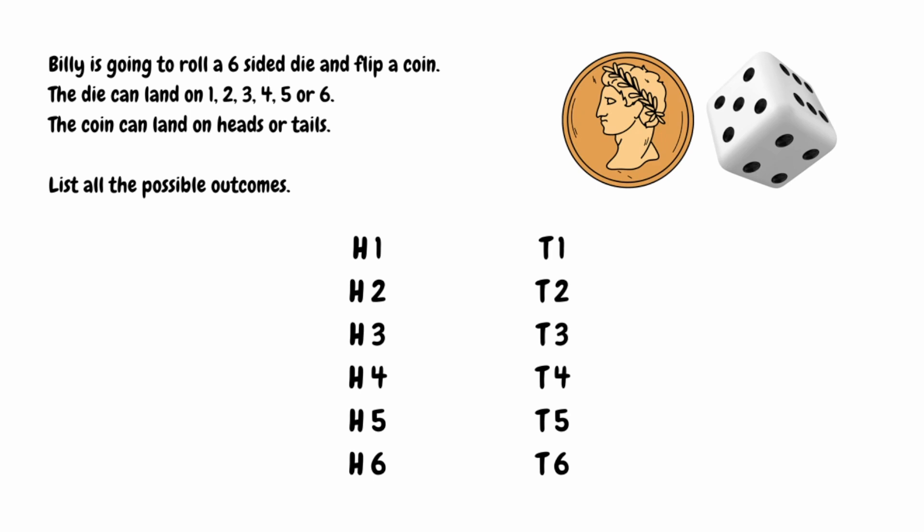Those are all our possible outcomes when we flip a coin and roll a die — 12 outcomes in total. This can be found by multiplying the outcomes of each individual event: 2 possible outcomes for the coin flip multiplied by 6 possible outcomes for the die gives us 12.